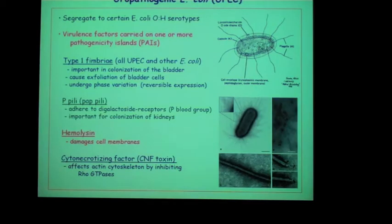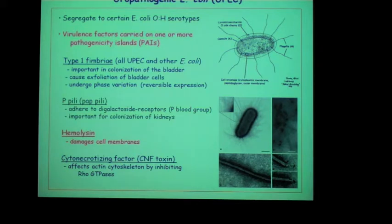The E. coli that cause UTI are called uropathogenic E. coli, or UPEC. They're not your garden variety E. coli, but instead have acquired virulence factors adapted for the urinary tract. These virulence factors moved in by way of pathogenicity islands that integrated into the chromosome. This happened to certain clones of E. coli — UPEC belong to certain O:H serotypes — evidence of clones that acquired these factors and became successful as urinary tract pathogens.